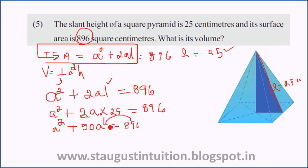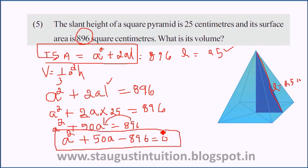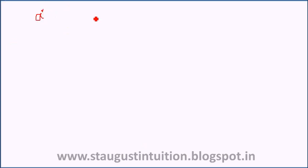Rearranging gives us the quadratic equation: a squared plus 50a minus 896 equals 0. We will solve this using the quadratic formula, where the equation looks like x squared plus 50x minus 896 equals 0.